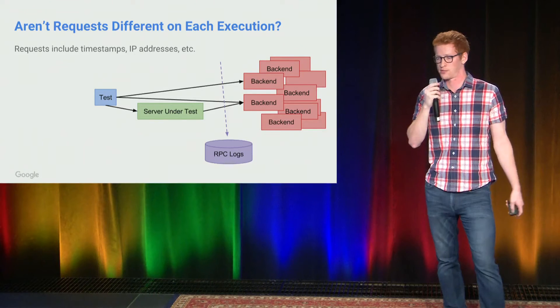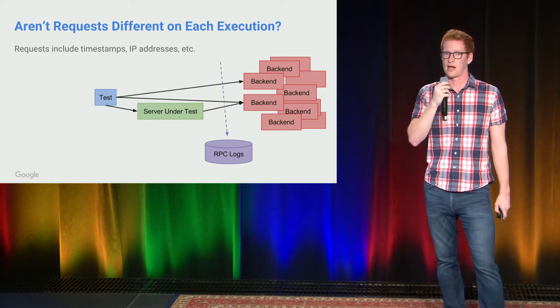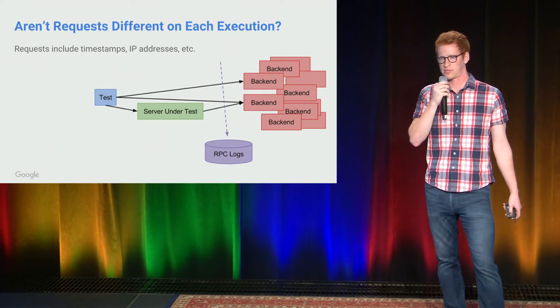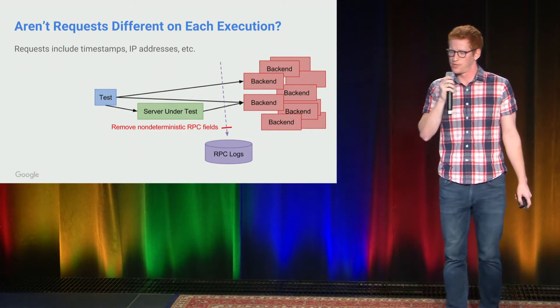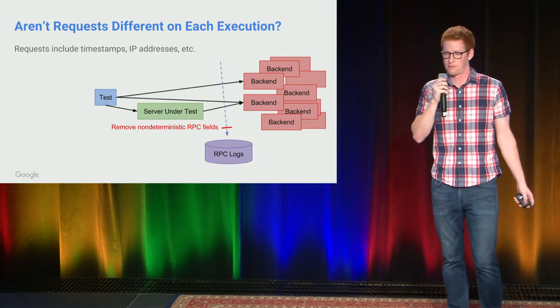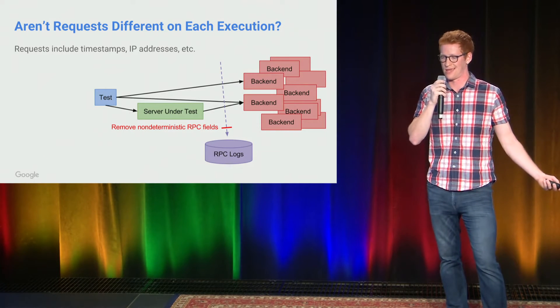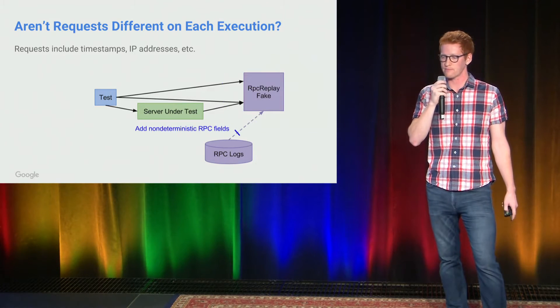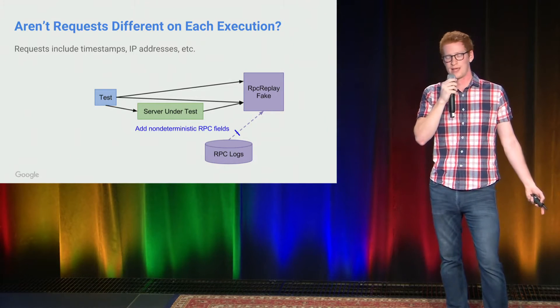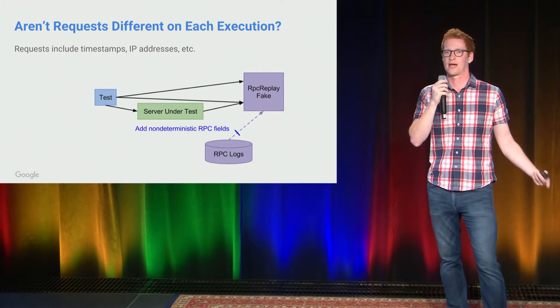This is not always possible, of course. There are things like timestamps, IDs, and IP addresses that are not deterministic, and they probably shouldn't be either. So essentially what we do is, before we write the RPC logs down, we run a processor over them that does some metadata work and strips out non-deterministic fields. Then before we replay them, if those non-deterministic fields are in the response, we can add them back in. A good example would be a timestamp — if the response needed a timestamp, we could put one back in after replaying it back to the system under test.